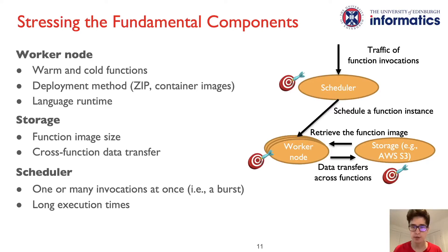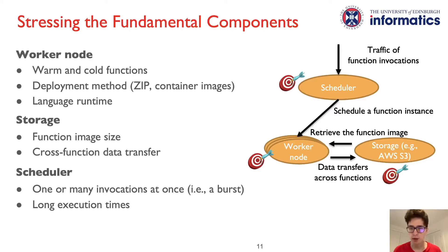To stress each of these components separately, we configure the following parameters. One can stress the worker nodes by changing the characteristics of the deployed functions. Stellar can trigger warm function invocations if it invokes functions frequently, for example every second, so that the providers keep function instances alive, or trigger cold invocations by invoking functions rarely, for example once in 30 minutes, which causes spawning a new function instance before an invocation can be processed — a cold start. The time it takes to spawn a new instance highly depends on the function characteristics that Stellar can vary. For example, Stellar allows using two deployment methods: deploying a function with a zip archive or a container image. Also, Stellar allows choosing a language runtime, for example, deploying a function written in Python or Go.